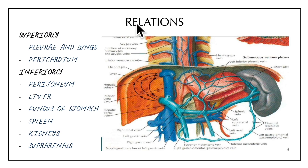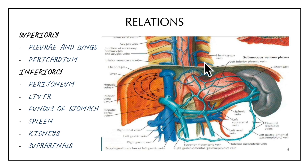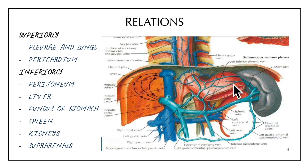Now let's look at the relations of the diaphragm. It is related superiorly with the pleura, the lungs, and the pericardium. It is related inferiorly with the peritoneum, the liver, the fundus of the stomach, the spleen, the kidneys, and the suprarenal glands.